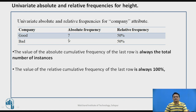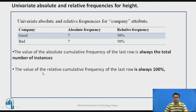On the same lines, if you analyze the company attribute, company can be good or bad. The absolute frequency of 'good' is 7, meaning 7 persons represent good company, and the remaining 7 represent bad company. The relative frequency is 50 percent for each. The last row's relative cumulative frequency will always be 100, and the last row's absolute cumulative frequency represents the total number of instances.